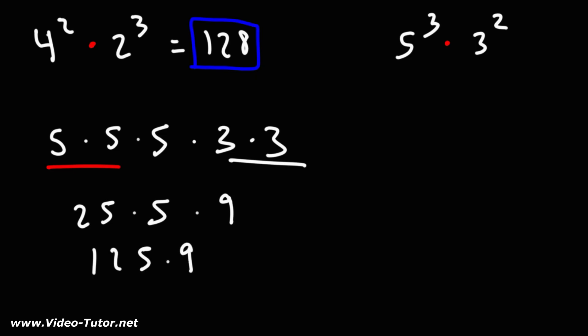Now, what's 125 times 9? Well, we could do some long multiplication. 5 times 9 is 45. We could write the 5, carry over the 4. 2 times 9 is 18, plus 4, that's 22. We'll write the second digit 2, carry over the other 2. 9 times 1 is 9, plus 2, that's 11.